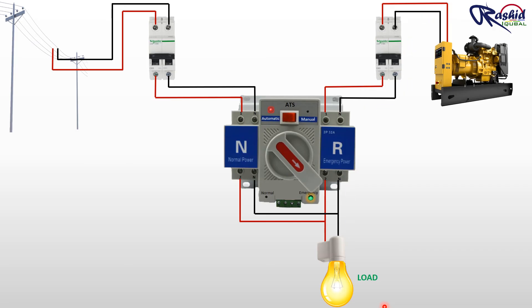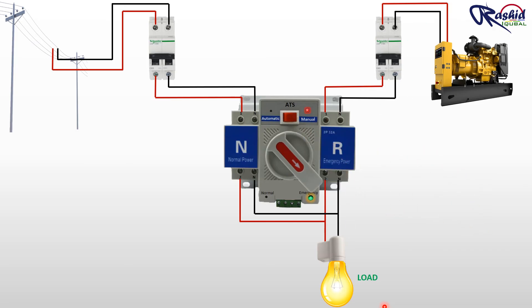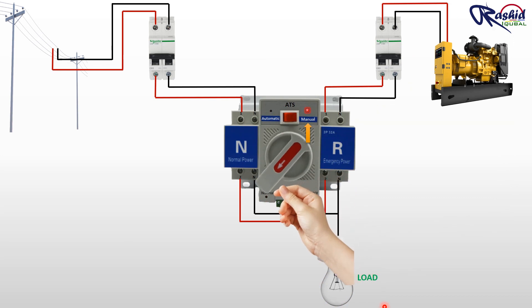On the other hand, if we flip the switch towards manual direction, then we can move the knob towards any direction wherever we want, either normal or emergency. In that case we can operate manually.